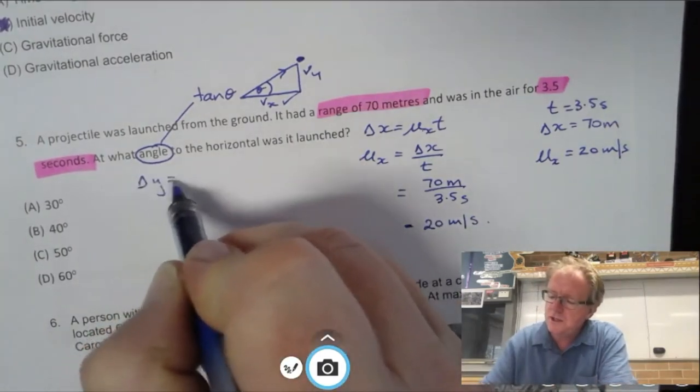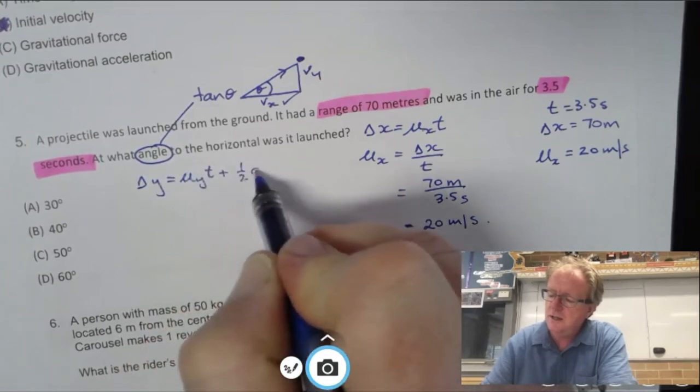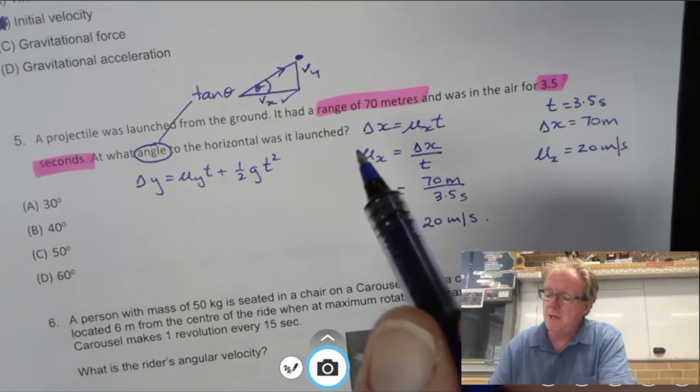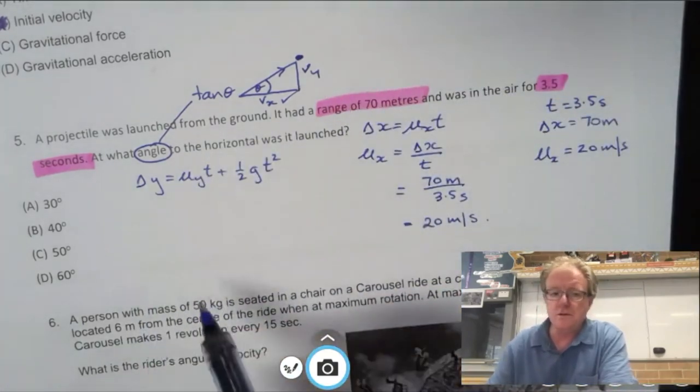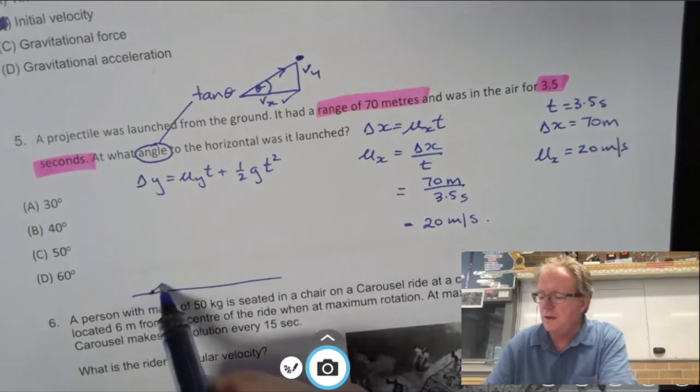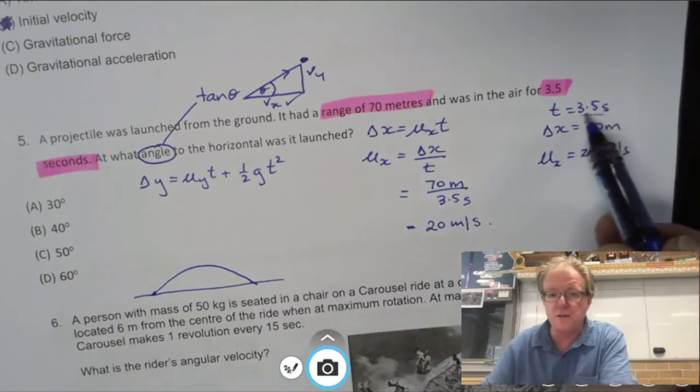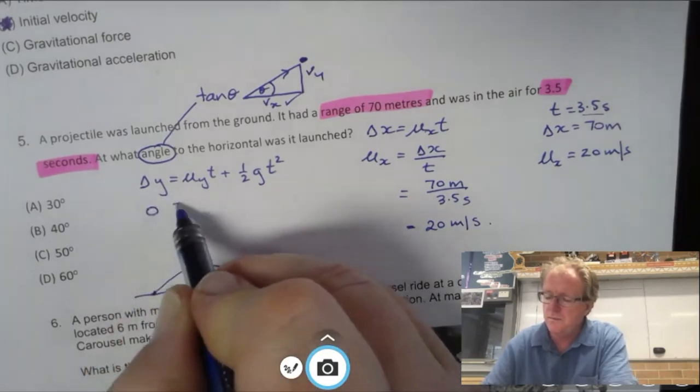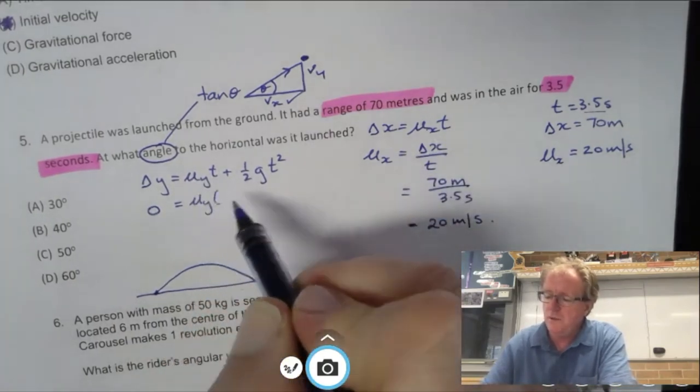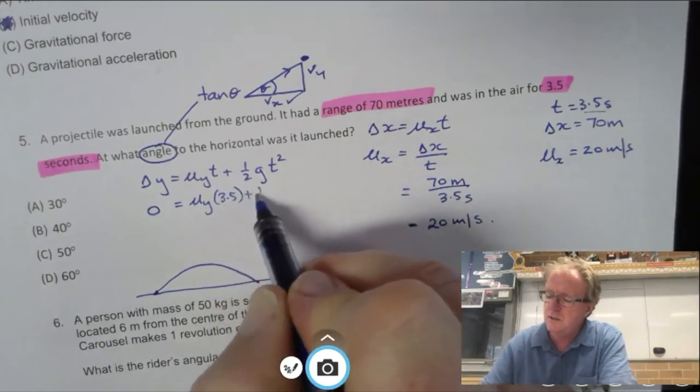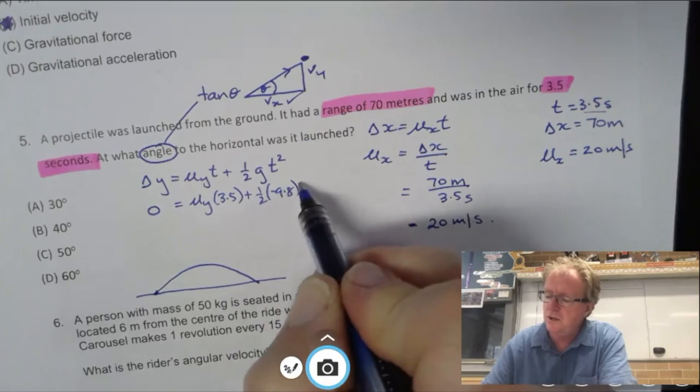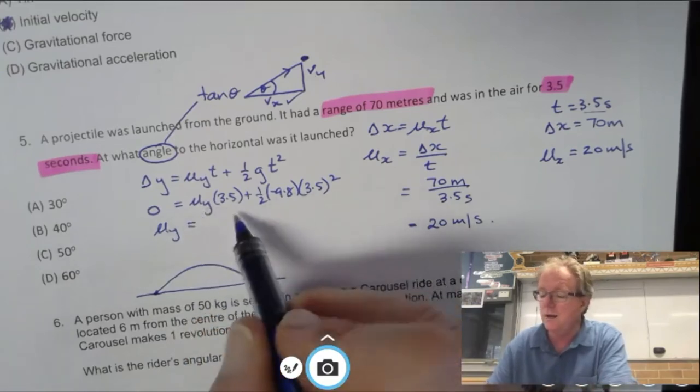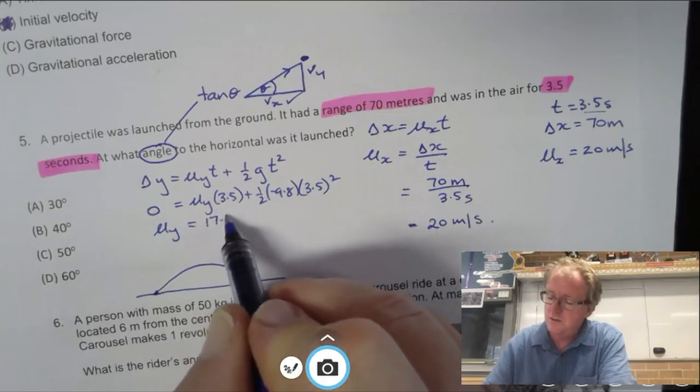Now we need to find the y component. If we think about our equation like this, change in y is uy t plus a half g t squared, because that's the acceleration in the y direction. If we think about it like this, we're starting from ground there, going up and then coming down. That's in a time of 3.5 seconds. So the change in the y is actually zero. We started there, gone up to maximum and come back down. The change in y is zero. We don't know uy, but we do know the time of flight, 3.5 seconds. We put in our g value and 3.5 seconds squared. That means the only unknown here is uy. Chuck that in your calculator and you get 17.15 metres per second. So now we've got both of those.